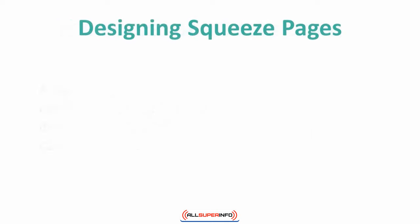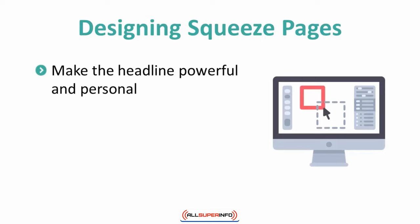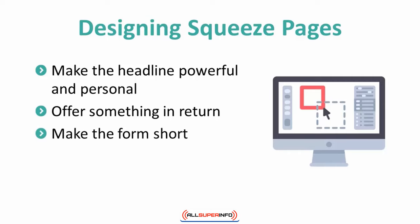Here are some tips. 1. Make the headline powerful and personal. If you make the user feel like this is something that will be exclusive to them, they will be more inclined to opt-in. 2. Offer something in return for their contact information. Many companies offer some sort of free, relevant content item that entices the user to join the list. 3. The shorter the form, the more likely a user is to opt-in.